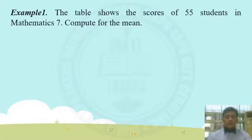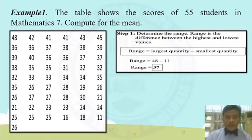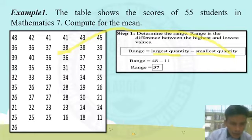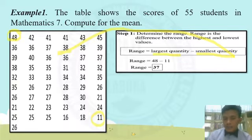Example number 1. The table shows the scores of 55 students in Mathematics 7. We need to compute for the mean. First step: we need to get the range — largest quantity minus smallest quantity. The largest quantity is 48 and the smallest is 11. So, 48 minus 11 equals 37. Therefore, the value of our range is 37.